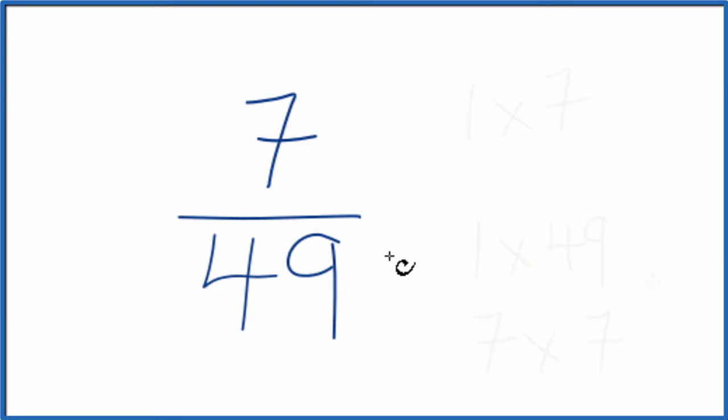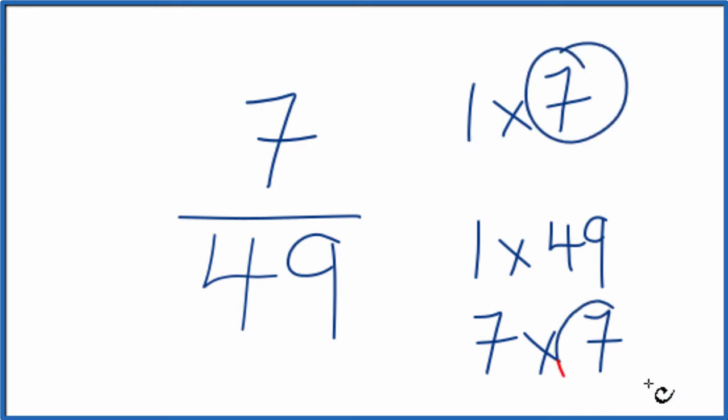That looks like this. So as we look at these, the factors for 7 and 49, the greatest common factor is going to be 7.